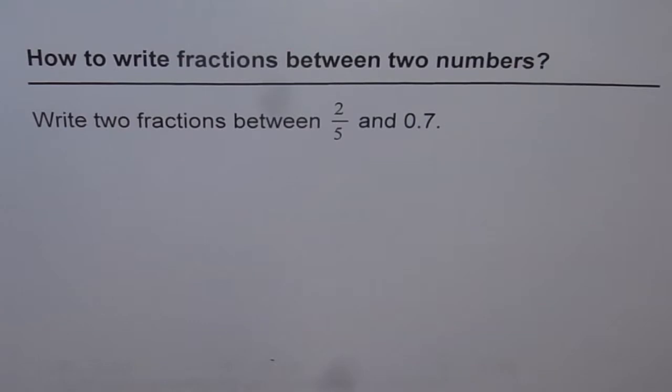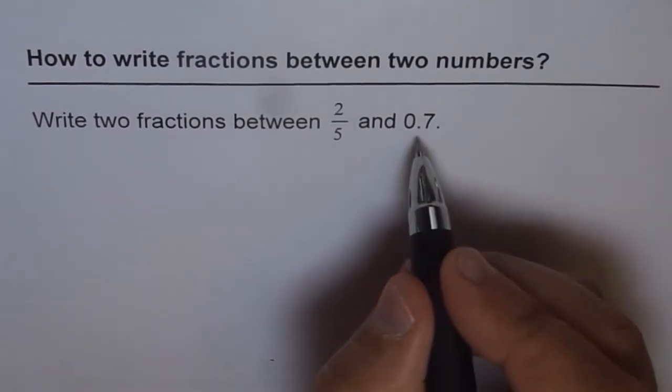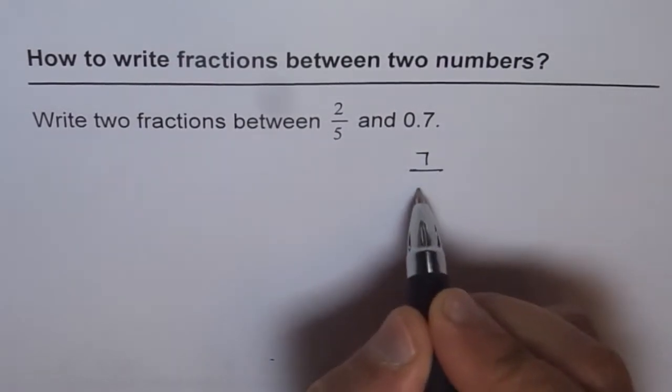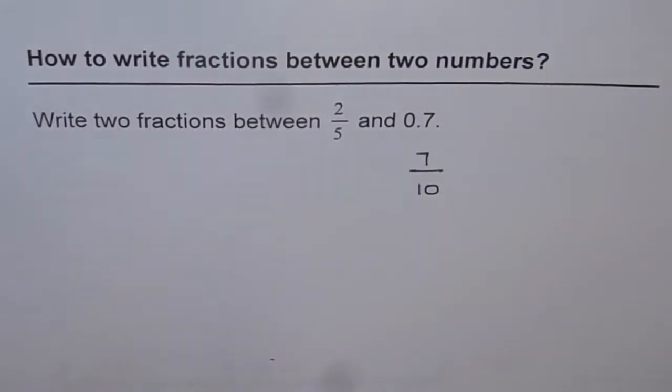How can we do this kind of equation? Well, let's first write down the decimal number as a fraction. So 0.7 can be written as 7 over 10. 7 over 10 is 0.7.